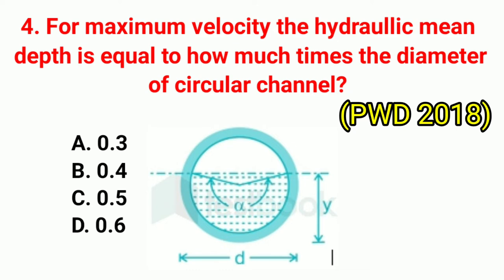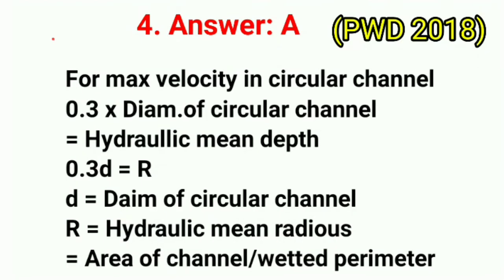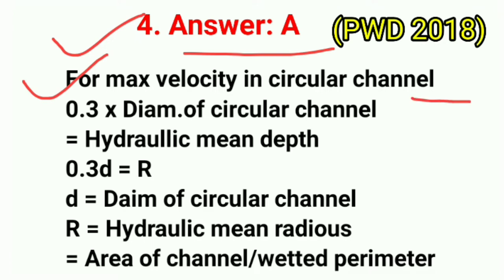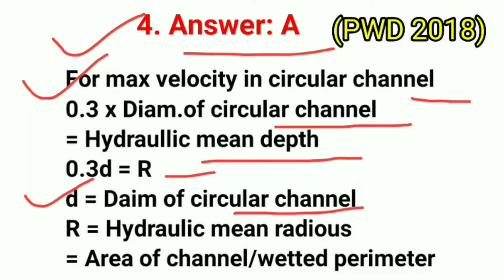Question No. 4. For maximum velocity, the hydraulic mean depth is equal to how many times the diameter of a circular channel? The correct answer is option A: 0.3 times. For maximum velocity in a circular channel, 0.3 multiplied by diameter of circular channel equals hydraulic mean depth: 0.3D = R, where D is the diameter and R is the hydraulic mean radius, equal to area of channel upon wetted perimeter.